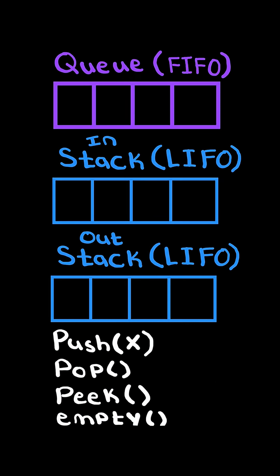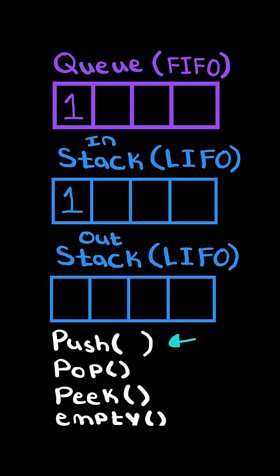We will label each stack as either an in-stack or an out-stack. For example, if we want to push one, in the queue we would just append it, and to get a similar result we append it to the in-stack. Similarly, if we push two, we again append it to the in-stack.